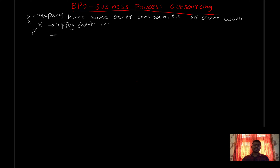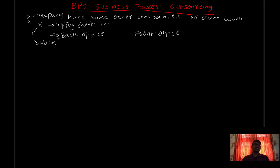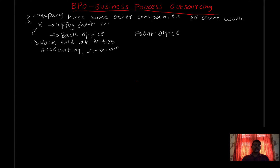BPO types are back office and front office. These are the two categories. Back office covers a range of back-end work — for example, accounting, IT services, and payment management.